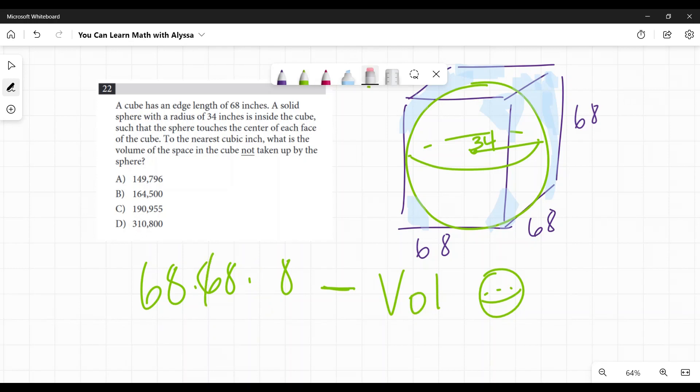68 times 68 times 68 minus the volume of a sphere. And as I said, the volume of a sphere is four thirds pi r cubed. And here our radius is 34. And that cubed goes with that 34—it does not mean the whole thing cubed. Be careful on that.